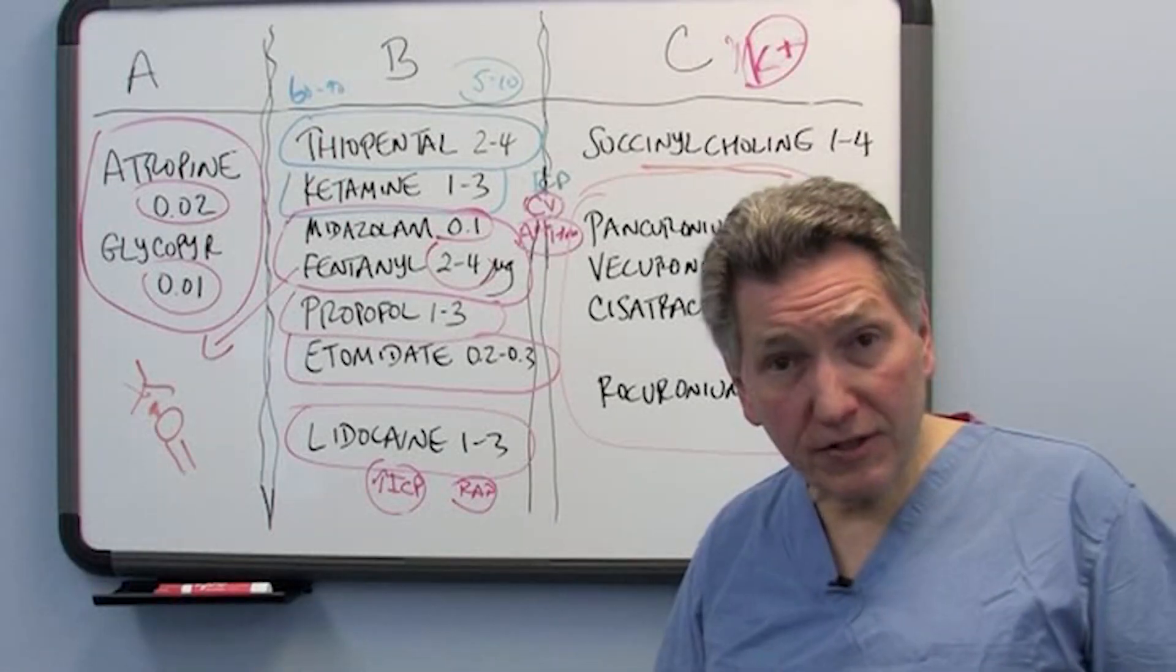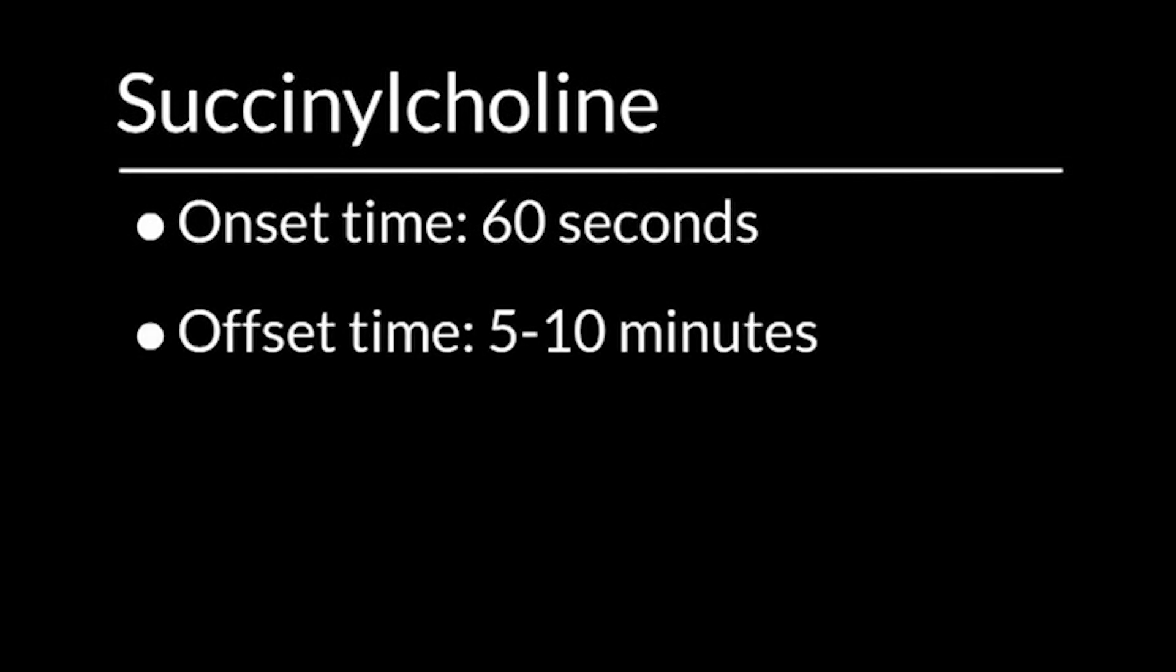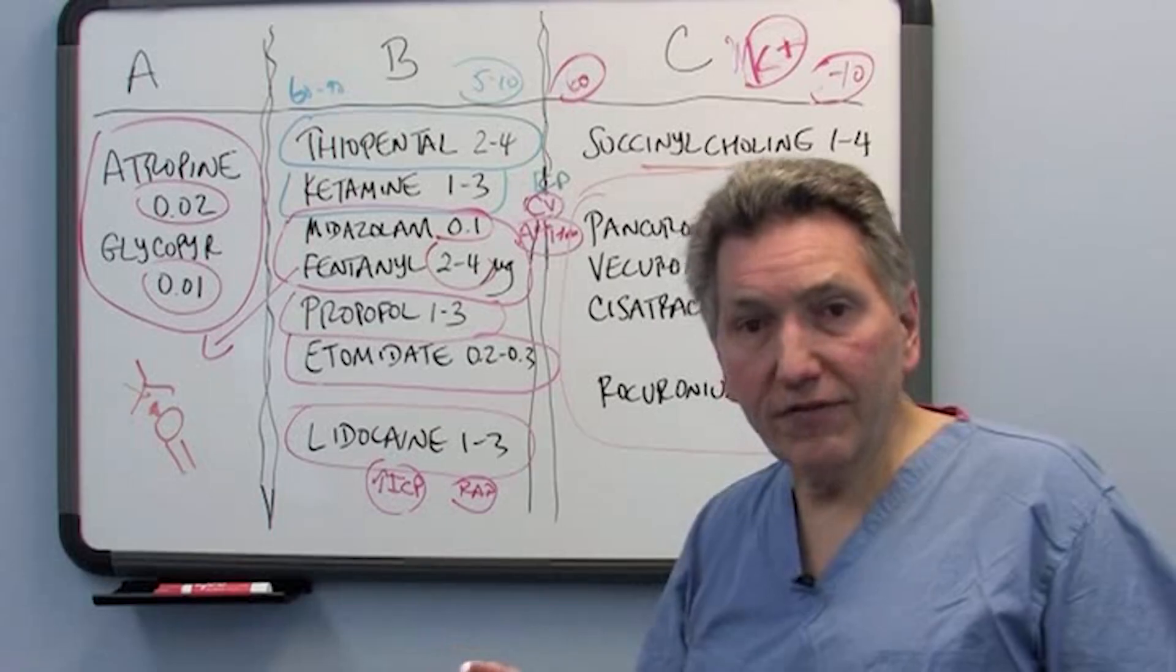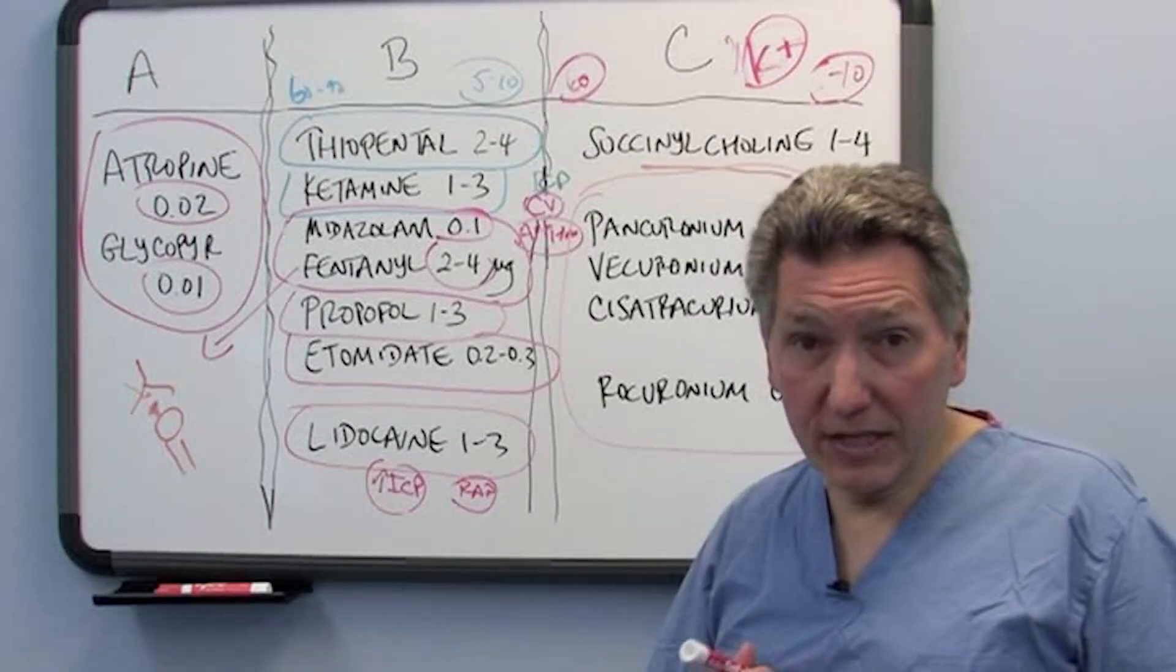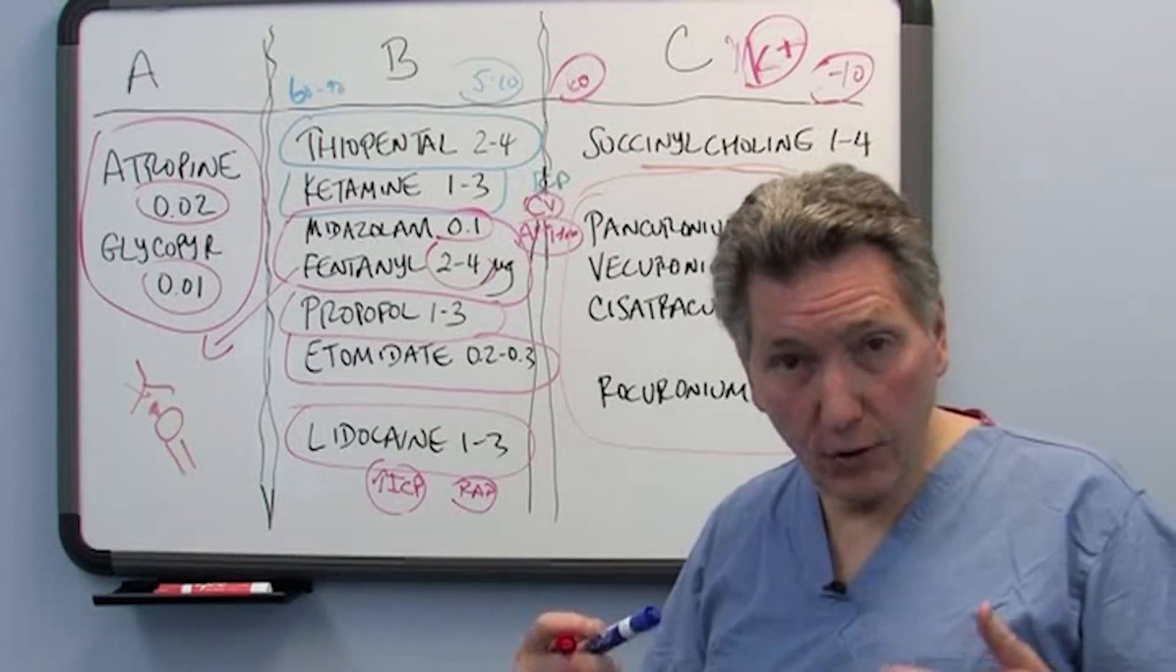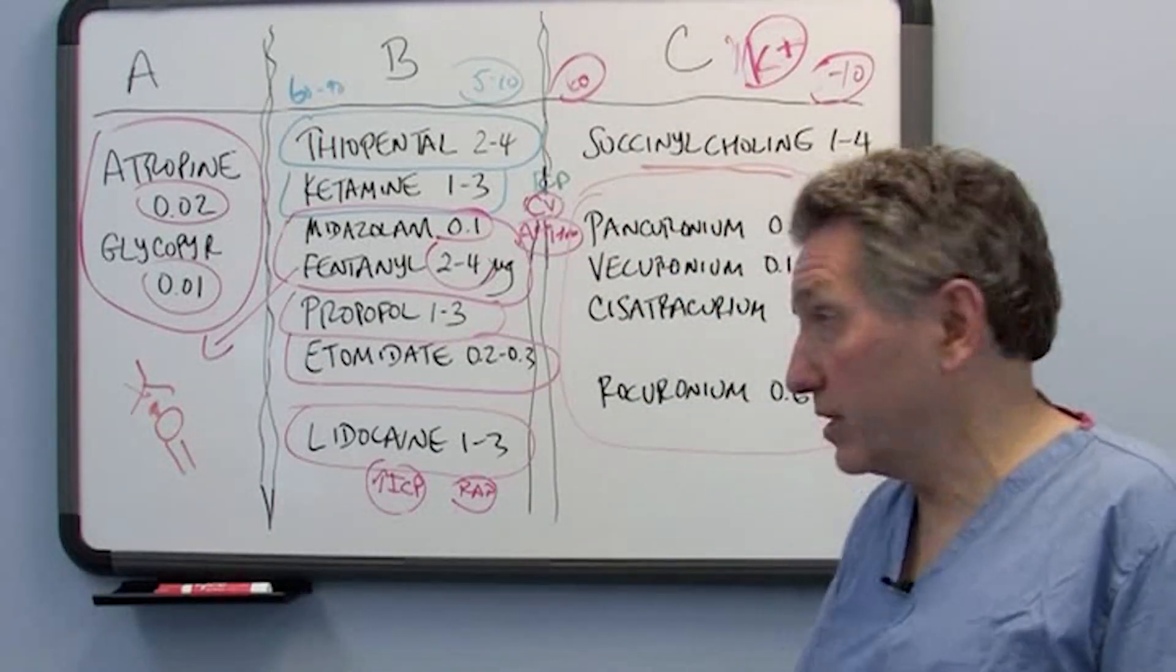Now, why would you want to use succinylcholine? What's the advantage of it? Well, it's very potent, and it's very reliable, and it works very quickly. Its onset time is 60 seconds, and its offset time in most individuals is 5 or 10 minutes. So it's a quick onset, a quick offset. It's a very reliable drug. If I have someone who's in laryngospasm, if I have someone who I know I could ventilate, but I need to get them paralyzed quickly, succinylcholine is sort of the emergency drug that will do that. And I think, at least in my practice now, it's become exactly that. It's an emergency drug. It's something that's there if I have to paralyze somebody very, very quickly, and I have no contraindication to using it, then succinylcholine would be a reasonable choice.